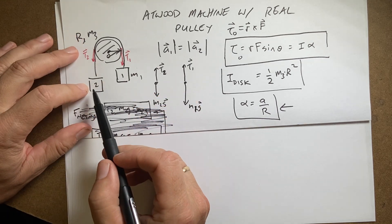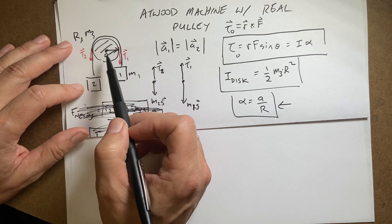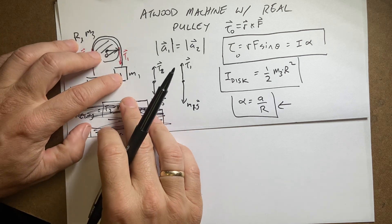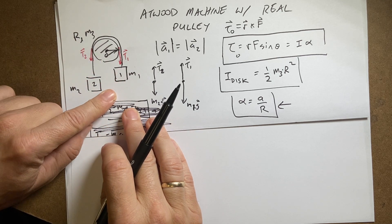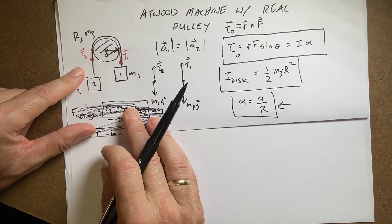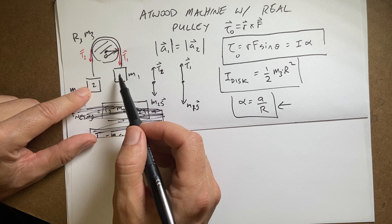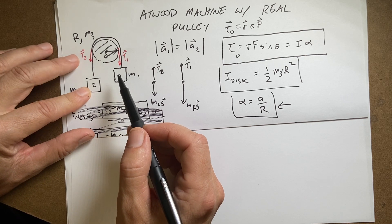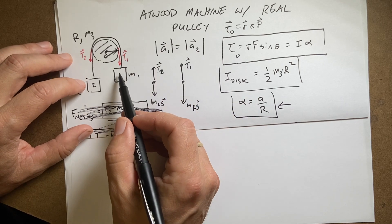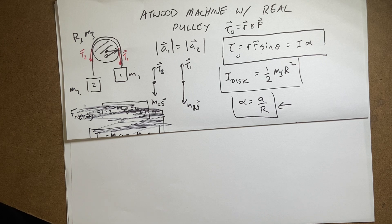So here's my problem. I have mass m2 and mass m1 hanging over a pulley with mass. The first thing to think about: if this mass moves down a centimeter, that mass has to move up a centimeter. So the velocity of these two masses has to be the same magnitude, and if the velocities are the same magnitude over time, the accelerations have to be the same. The magnitude of this acceleration has to equal the magnitude of that acceleration.